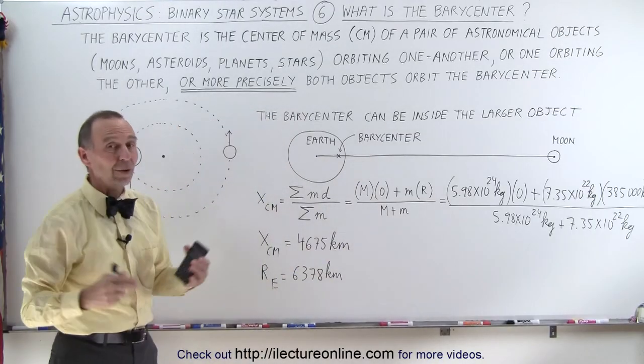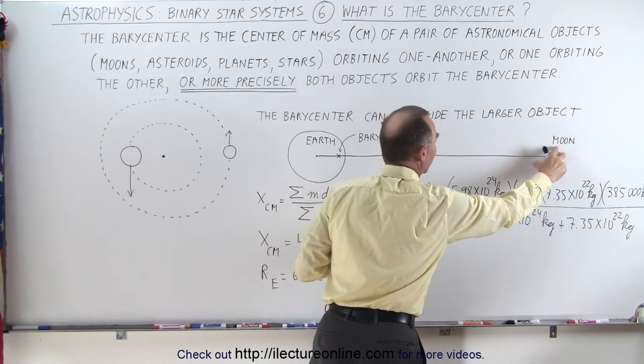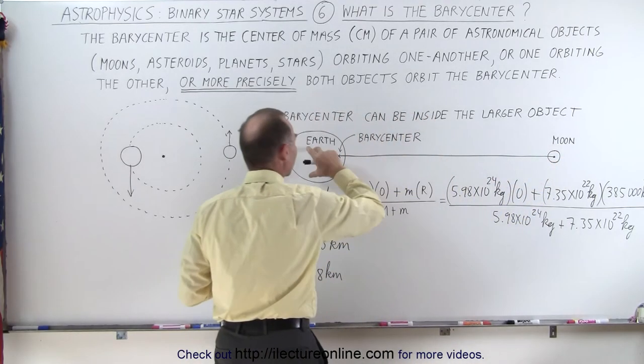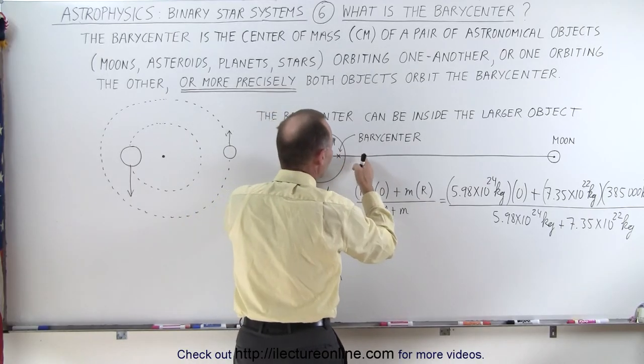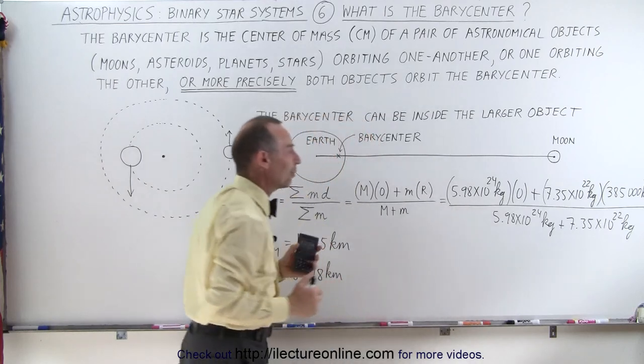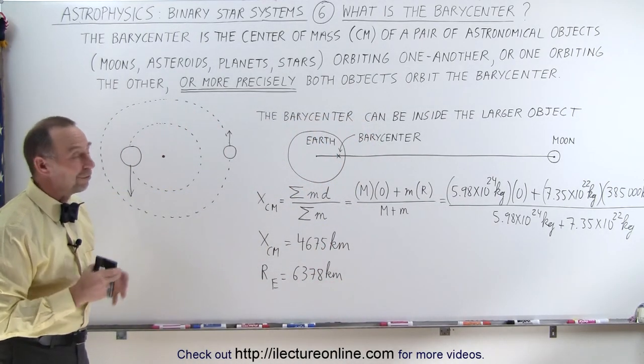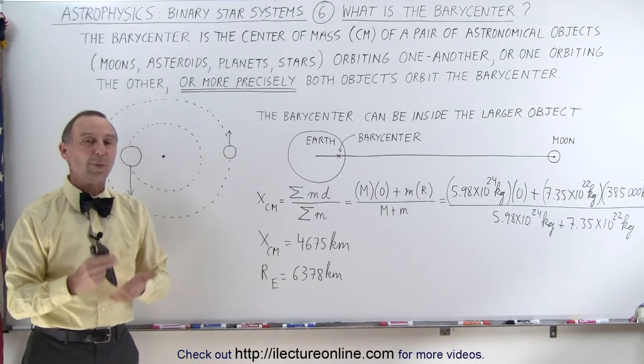In some cases, the barycenter will be outside the object. As the smaller object becomes significantly larger compared to the big object, the barycenter keeps moving further out. If they're equal in size, they'll be exactly halfway in between. And that's what we mean by the barycenter of objects that orbit one another.